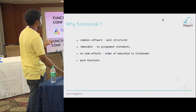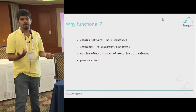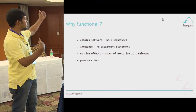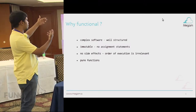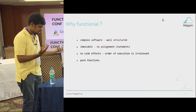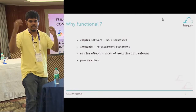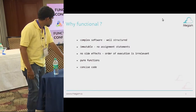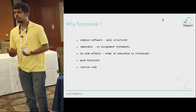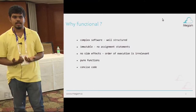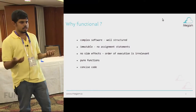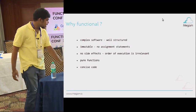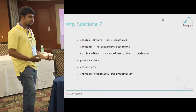Pure functions — something that has no side effects, something that is immutable, something that's well-structured. A pure function takes type A and gives a type B. And all this gives you concise code. If it's well-structured, the code is going to be concise, and if the code is concise, it increases readability.